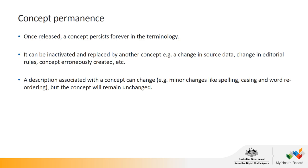Concept permanence is an important feature of the AMT. Once released, a concept persists forever in the terminology. It can be inactivated and replaced by another concept — for example, due to a change in source data, a change in editorial policies or business rules, or if a concept was erroneously created. A description associated with a concept may change due to changes in spelling, casing or word order, but the concept itself remains unchanged. Codes will not disappear and will not be reused, which is especially important when thinking of health records spanning the life of a patient.